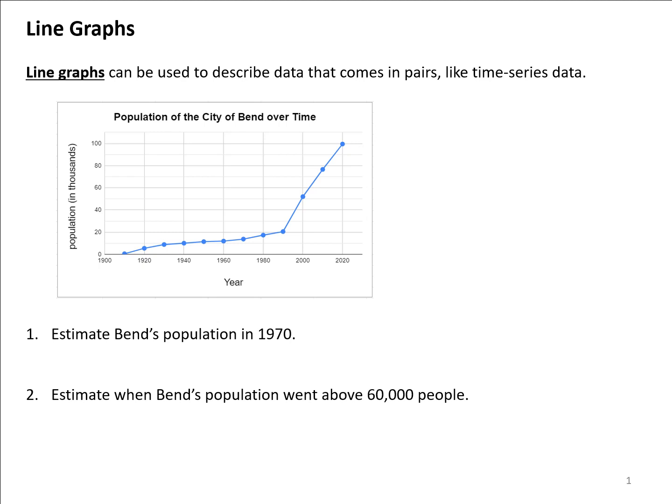Line graphs are another very common graph you might see to describe data. A line graph is a little different than what we've been looking at so far because it describes data that comes in pairs. An example that is very common would be time-series data, so data that pairs up at a specific point in time.